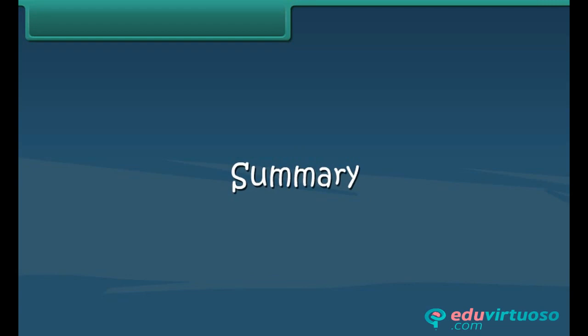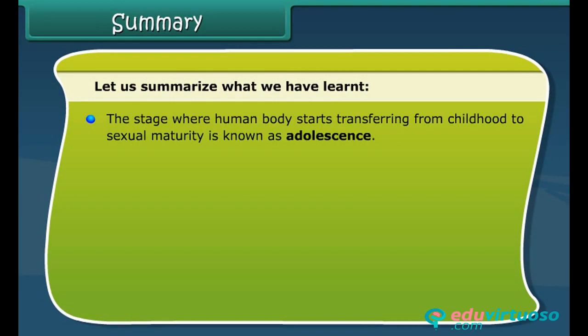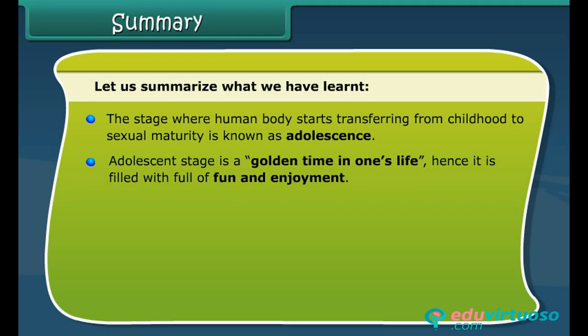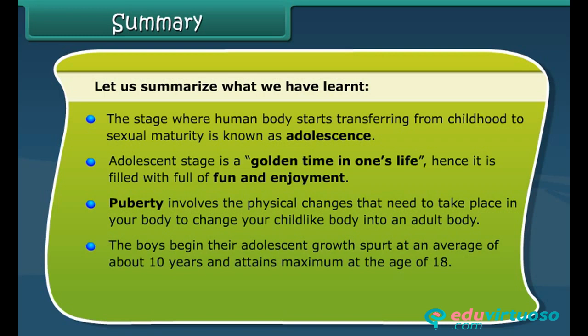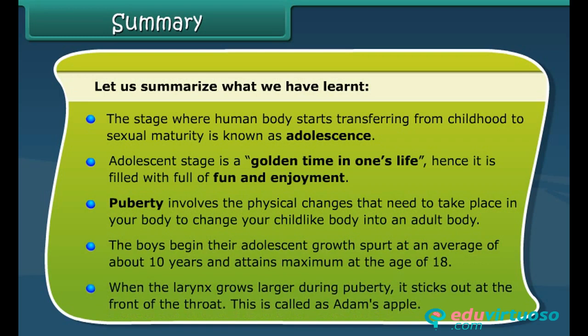Summary: the stage where the human body starts transferring from childhood to sexual maturity is known as adolescence — a golden time in one's life, filled with fun and enjoyment. Puberty involves the physical changes needed to change a childlike body into an adult body. Boys begin their adolescent growth spurt at an average of about 10 years and attain maximum height at 18. When the larynx grows larger during puberty, it sticks out at the front of the throat — this is called the Adam's apple.